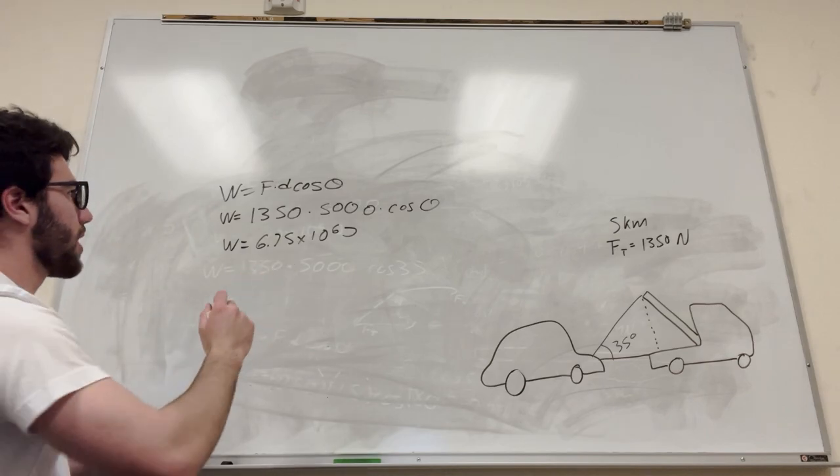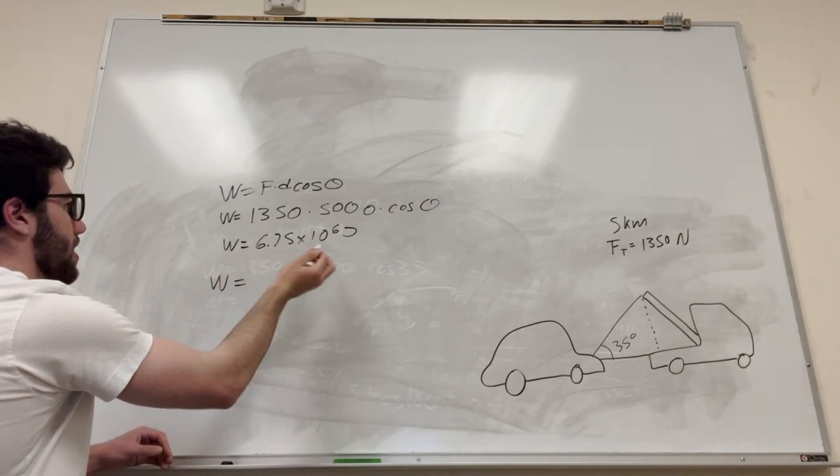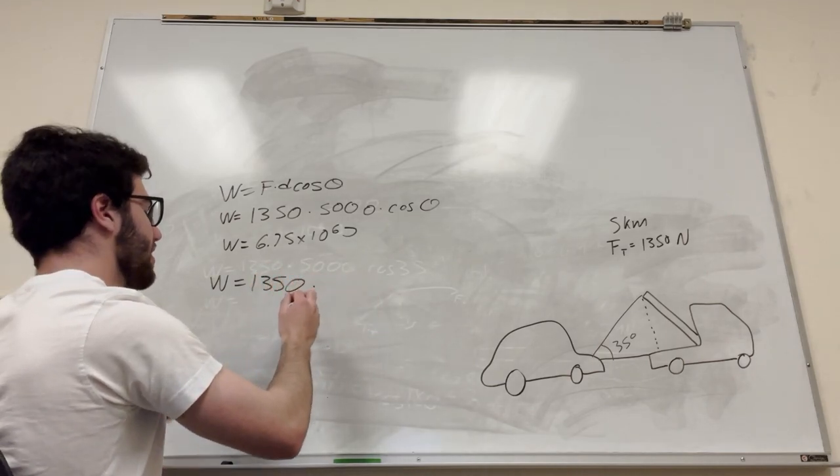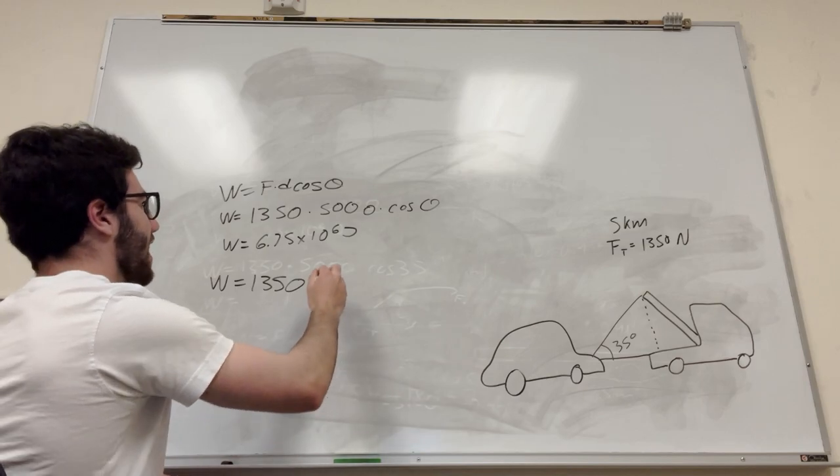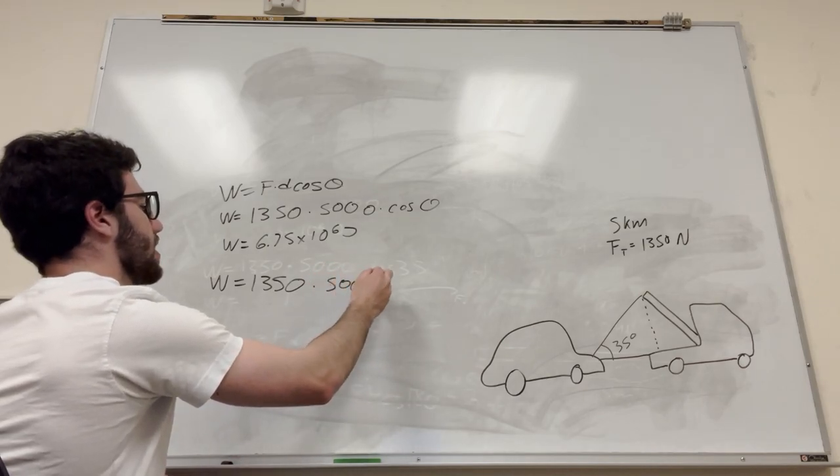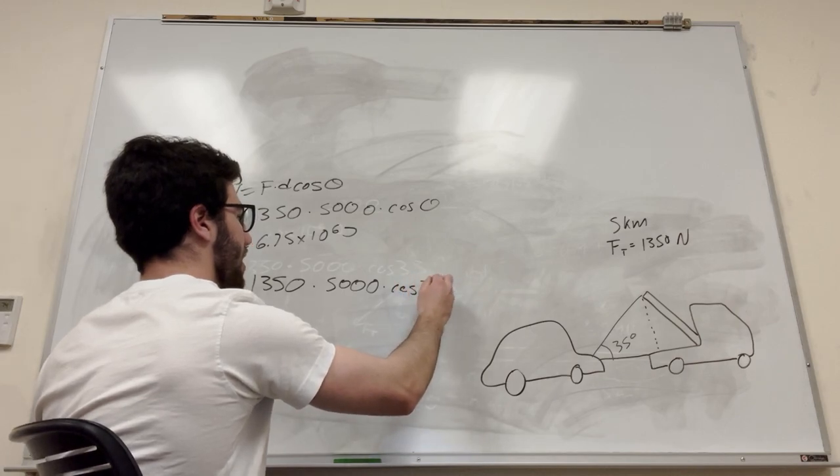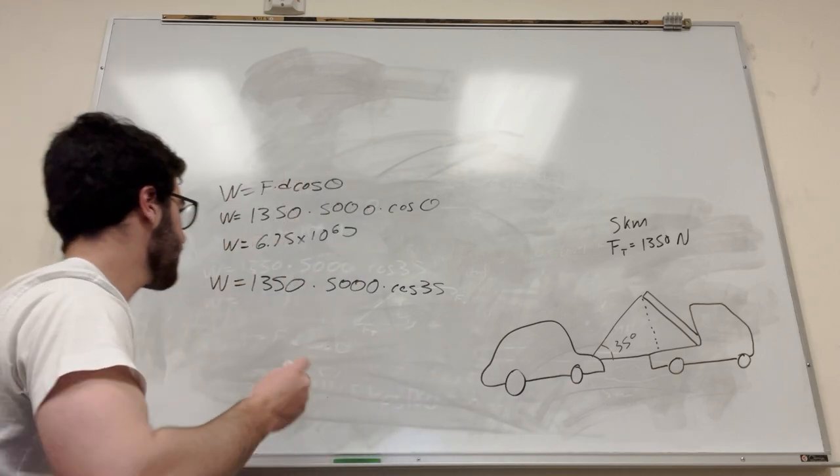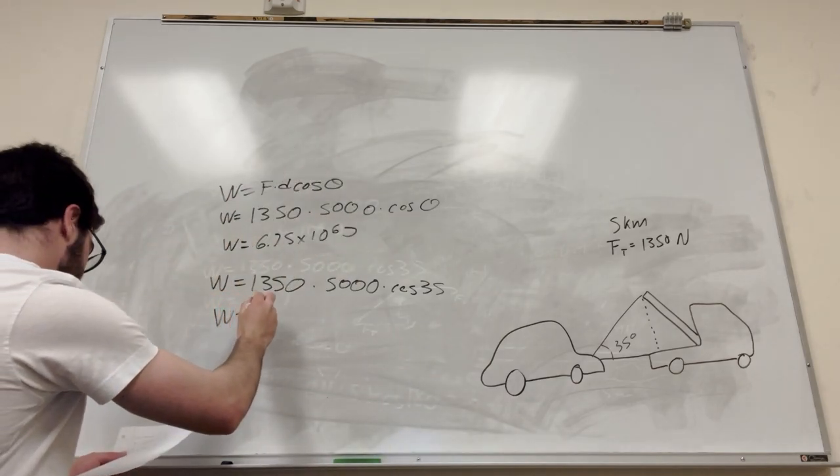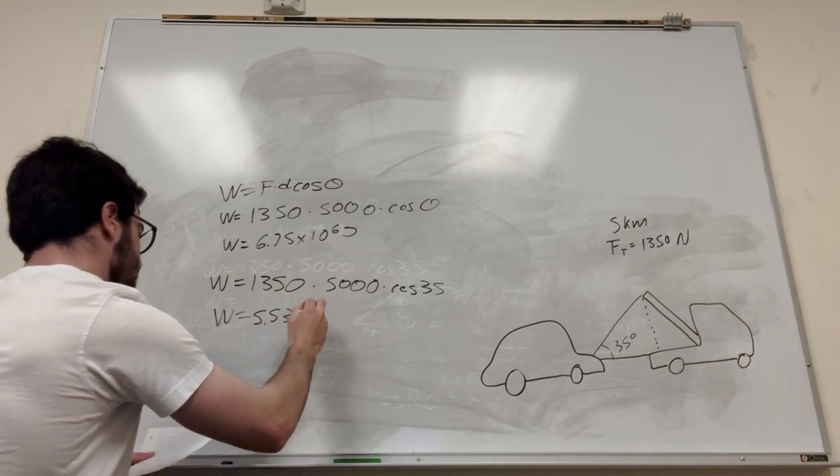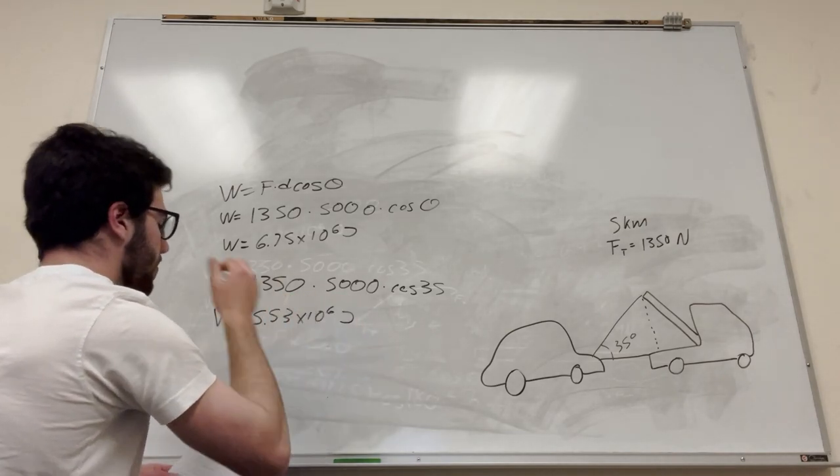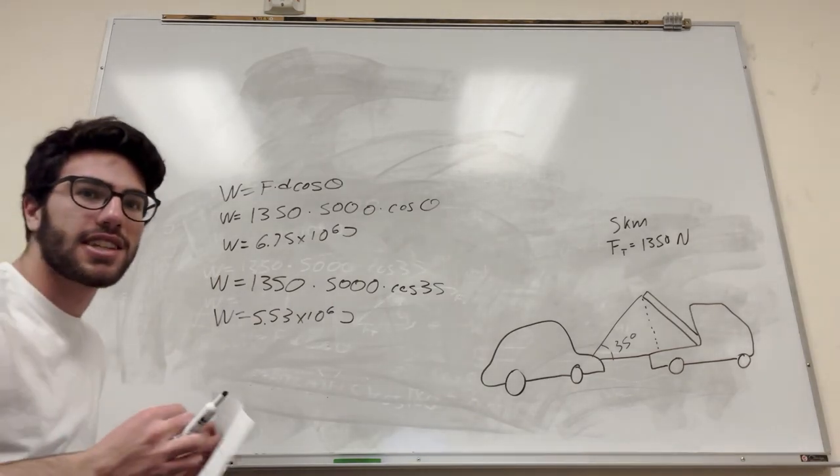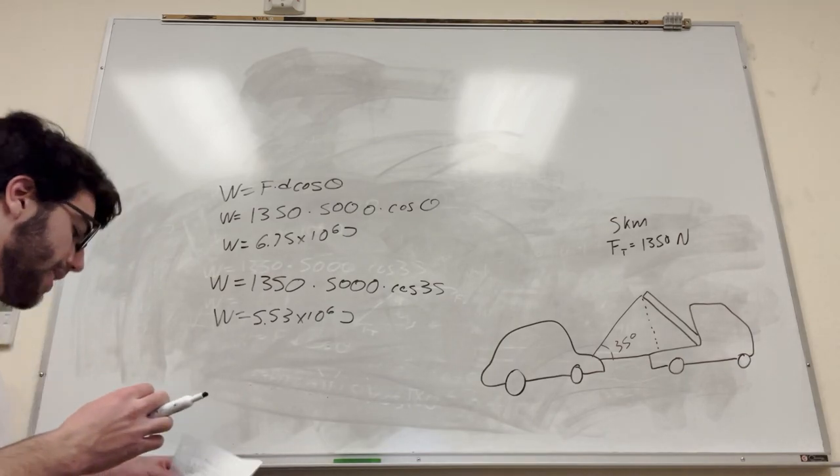So let's do the elevated one now. This one is going to be the same force, 1,350, times the distance, which is again 5,000, and then times cosine of 35. That's because the angle relative to this is 35 degrees up, so it's going to be a smaller number now. So if you calculate this, you're going to get 5.53 times 10 to the 6 joules. So it actually takes less work to pull it at this elevated position, which is kind of interesting. I guess that's why tow trucks do it. Okay, so that's part A.